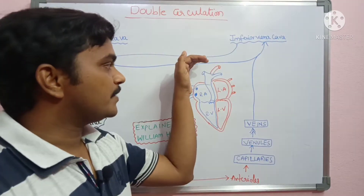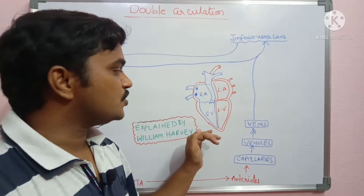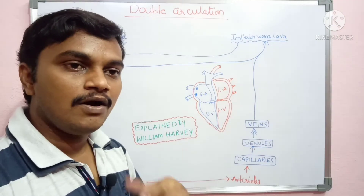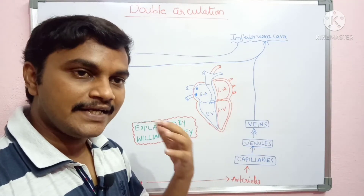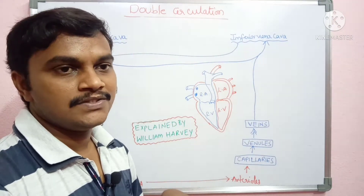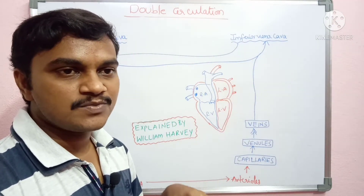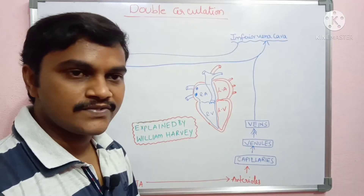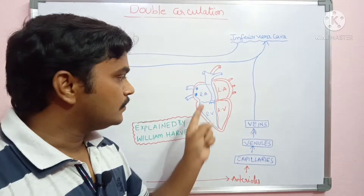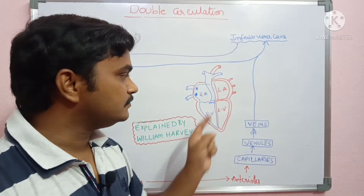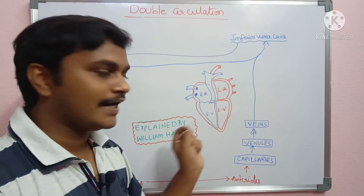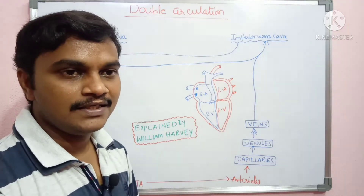Overall, the pre-caval veins and post-caval veins carry deoxygenated blood. So, from the body parts, the deoxygenated blood arrives at the right atrium.